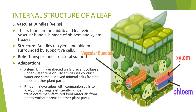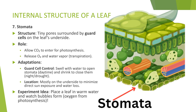6. Stomata: stomata are tiny pores surrounded by guard cells, primarily found on the leaf's underside. They allow carbon dioxide to enter for photosynthesis and release oxygen and water vapor. Guard cells control the opening and closing of stomata to regulate gas exchange and water loss — they swell to open stomata during the day and shrink to close them at night. Stomata are mostly on the underside to minimize direct sun exposure and water loss.